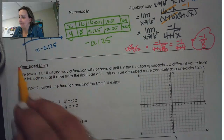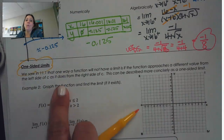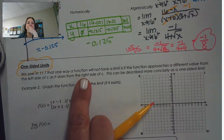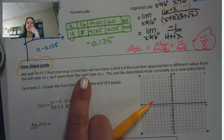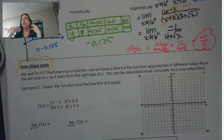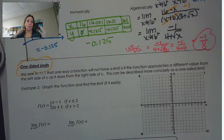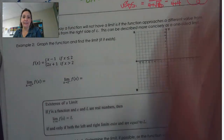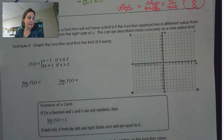In the first section, we saw that one way a function will not have a limit is if a function approaches a different value from the left side of c than it does from the right side of c. In order to have a limit at a specific value, they had to match. But could we have what's considered a one-sided limit? The answer is yes. This next example asks us to graph the function and find the limit if it exists for this piecewise function.